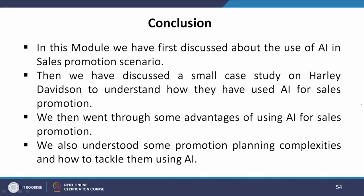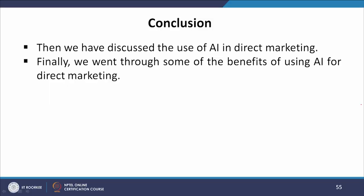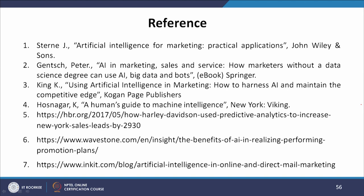To conclude, in this module we have first discussed the use of AI in a sales promotion scenario, then a case study on Harley Davidson to understand how they used AI for sales promotion. We then went through advantages of using AI for sales promotion, promotional planning complexities and how to tackle them using AI, and the use of AI in direct marketing. Finally, we went through some of the benefits of using AI for direct marketing. These are the seven sources from which the material for this module was taken.